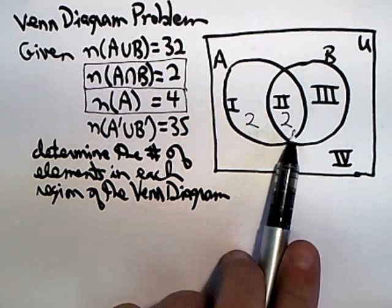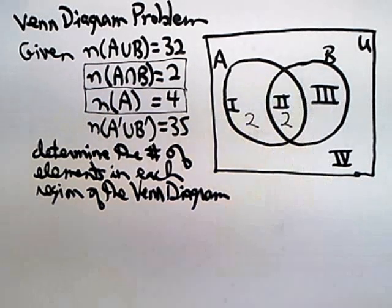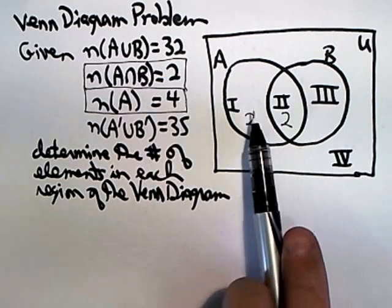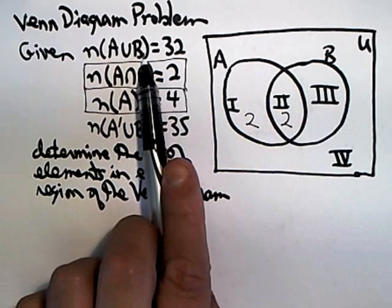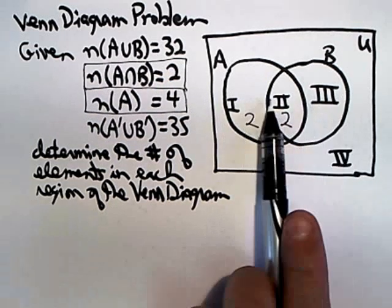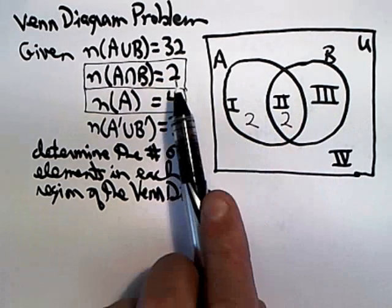union means either, so if you shade A, shade B, anything that's shaded is in the union. So we're actually looking at 1, 2, and 3 added together. So A union B is 32 tells us that those three numbers have to add up to 32.